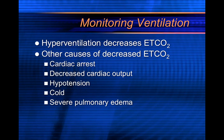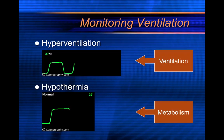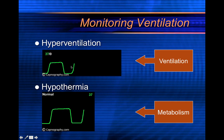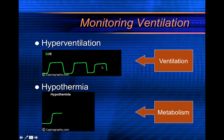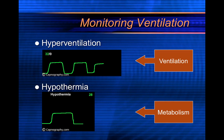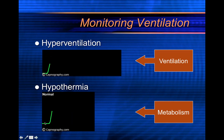If end-tidal CO2 is decreased, first think: are they hyperventilating? If they're breathing at a normal rate or slowly, there might be a cardiac output issue. Here you can see hyperventilation demonstrated — as you increase the rate, the value goes down: 35, 32, 28. The faster you breathe, the lower your value will be.